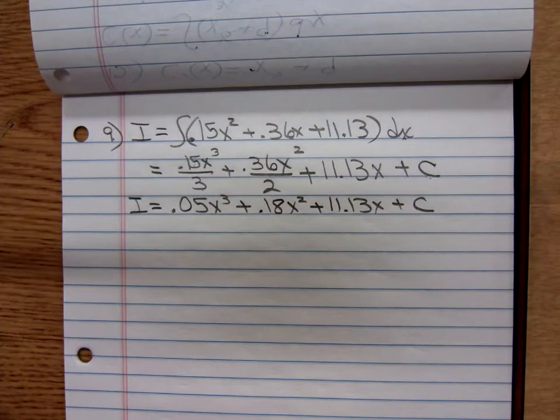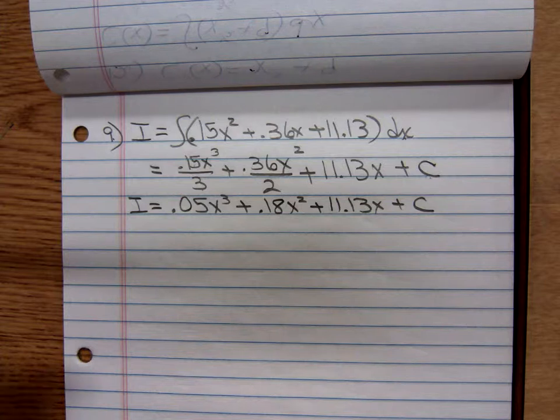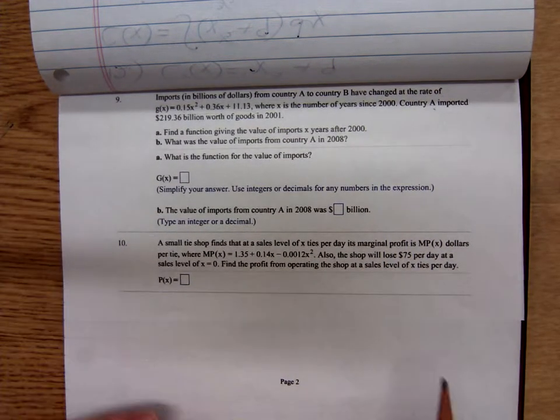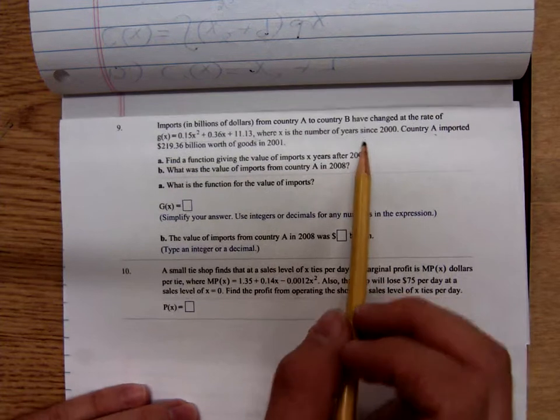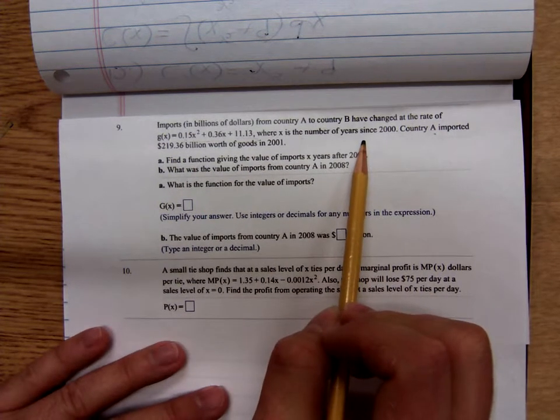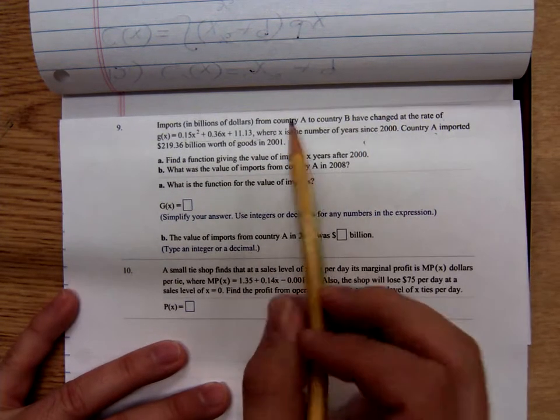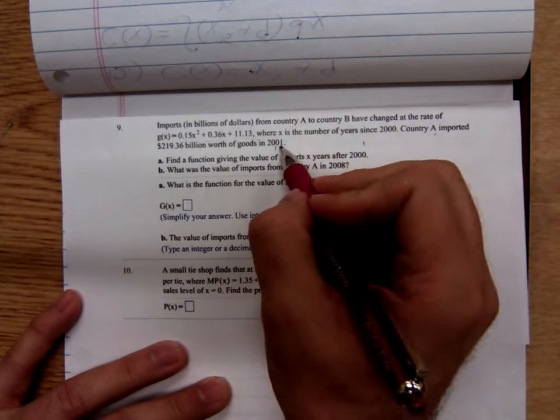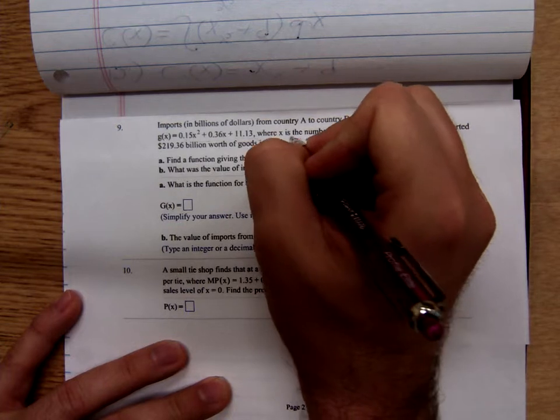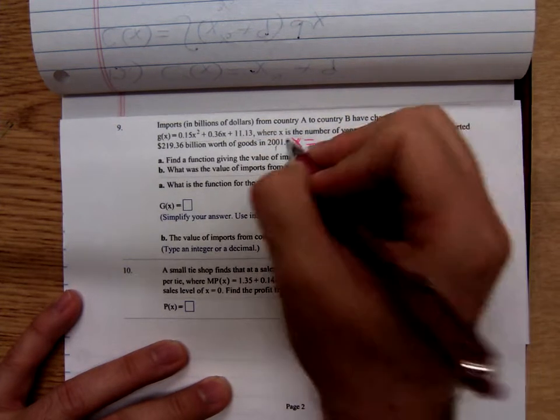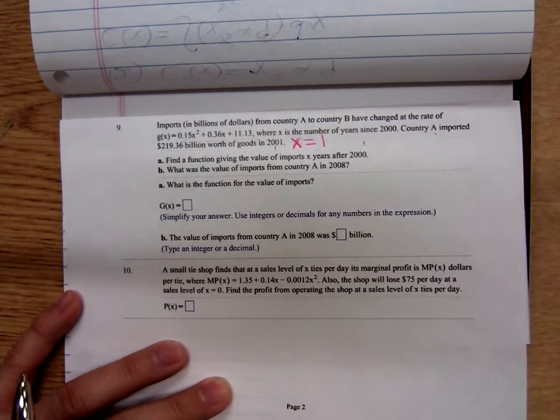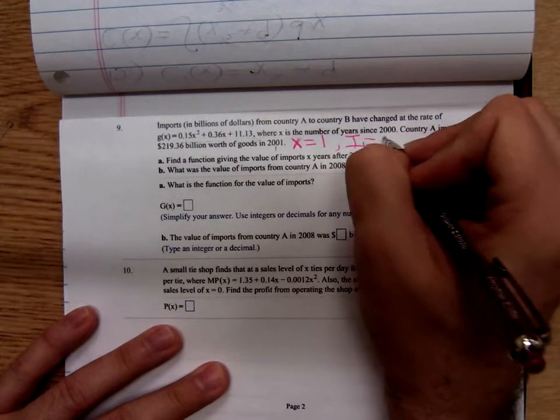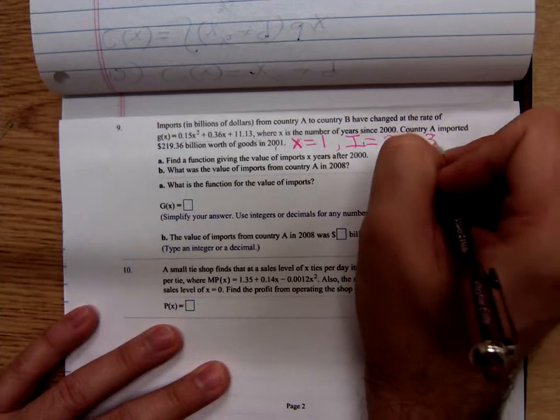And I'm trying to find, where did I put it? Here's the original statement of the problem. Realize x is the number of years since 2000. In the year 2001, what would our x value be? In the year 2001, how many years have passed since 2000?